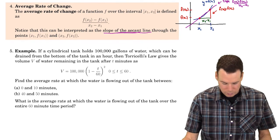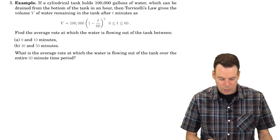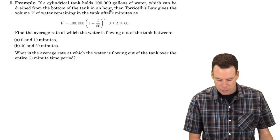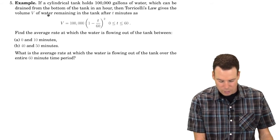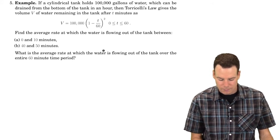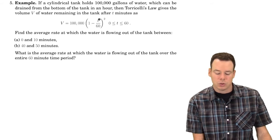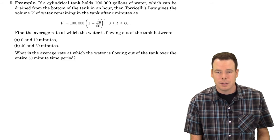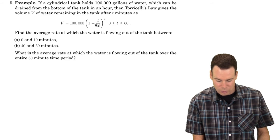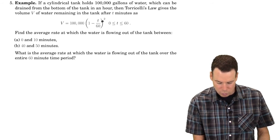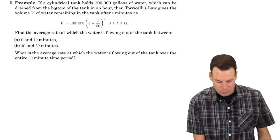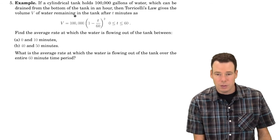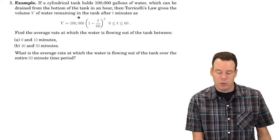Let's work out an example. We have a cylindrical tank that holds one hundred thousand gallons of water, which can be drained from the bottom of the tank in an hour. Torricelli's law gives us that the volume of water remaining after t minutes is V equals one hundred thousand times one minus t over sixty, squared. At time zero we get one hundred thousand gallons, and at sixty minutes we get zero — so this agrees with both endpoints.